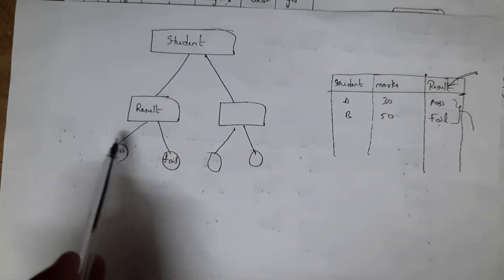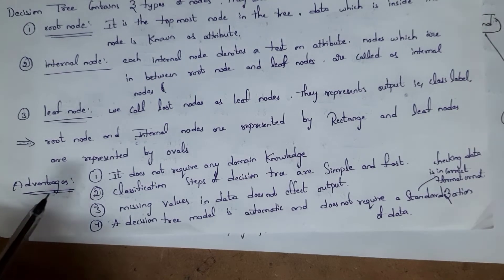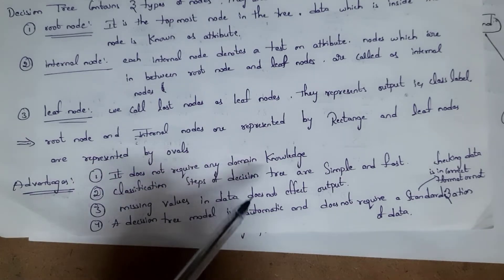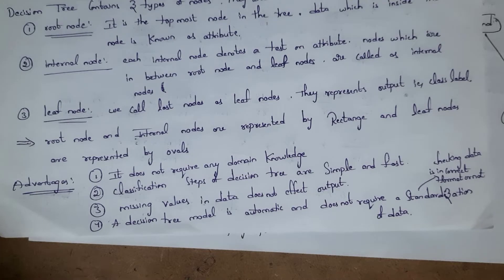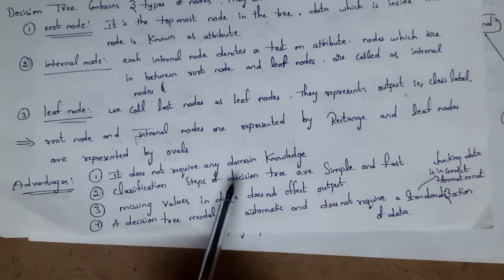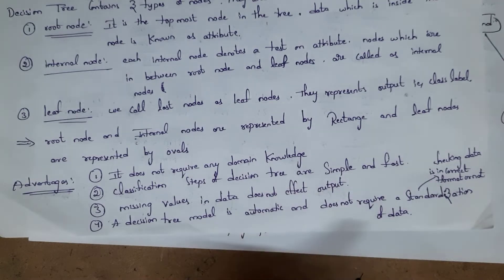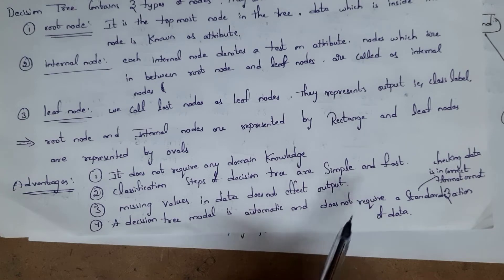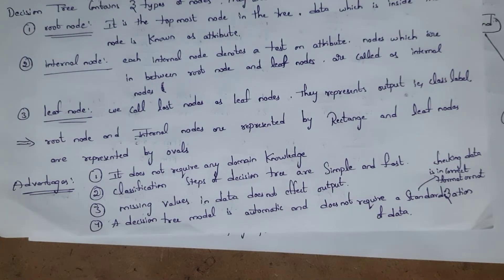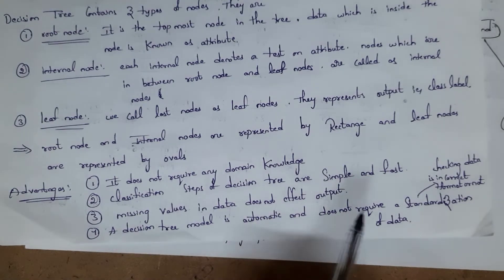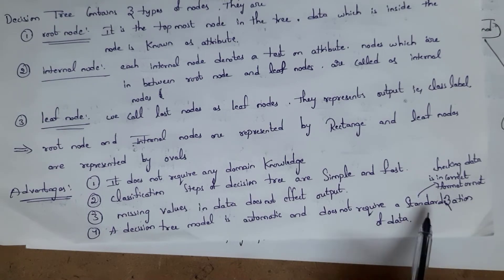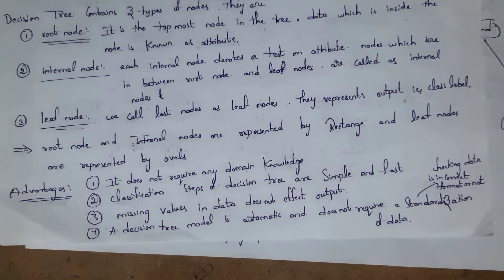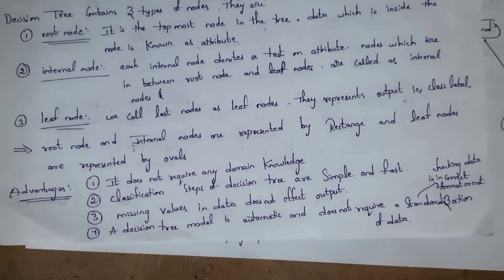Root node and internal nodes are represented by a rectangle, whereas leaf nodes are represented by an oval. The advantages of using a decision tree are: first, it does not require any domain knowledge — people who don't have domain knowledge can also use it. Second, classification steps of decision tree are simple and fast. Third, missing values in data do not affect the output. Also, decision tree is automatic and does not require any standardization of data.